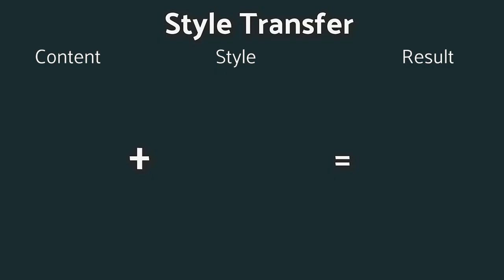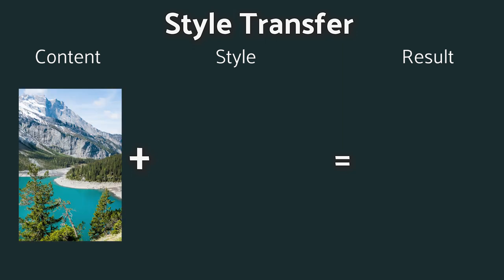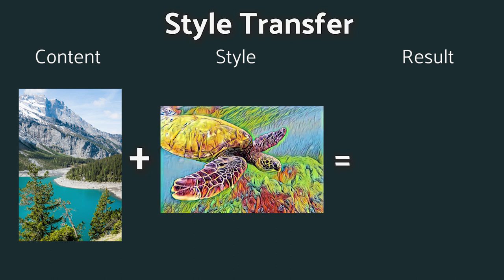Style transfer uses two images that serve as guides for generating that one final image. The first image is a content image, which tells the neural network what to draw and where to draw it. The second serves as a style guide, which tells the neural network what patterns to use when rendering that image.